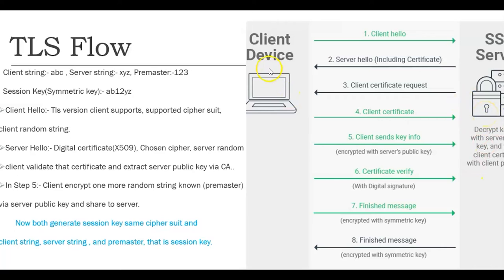So now the client has ABC, XYZ, and the pre-master key — because it generated it at the client end. And the server also has ABC, XYZ, and the pre-master key — because it has been received in step 5. Now both can generate the session key using the same cipher suite that was selected. The inputs to the cipher suite algorithm are the client string, server string, and pre-master. Both client and server will have the same session key.